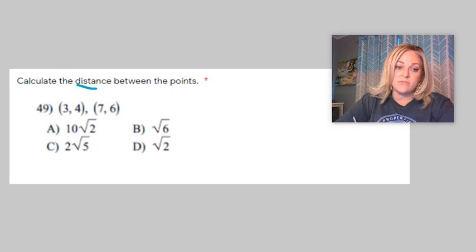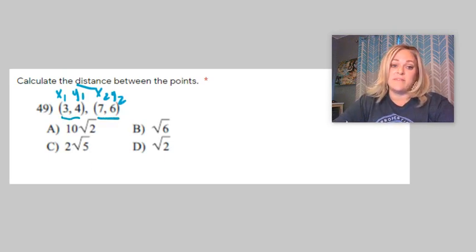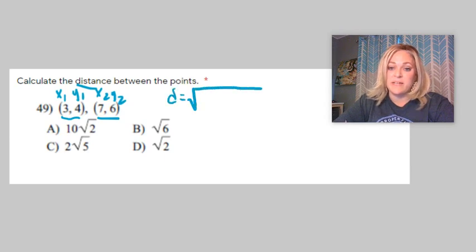So we'll just use the distance formula, and this is x1, y1, x2, y2, since the x and y from the first point and the x and y from the second point. So let's get this distance formula written down.